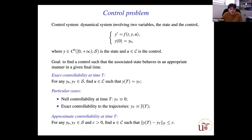Just to say some words about control theory: a general control system is a dynamical system in which y is the state of the system and u is an additional variable — the control — that you can choose freely in such a way that the system behaves in an appropriate way, in accord with our wishes.